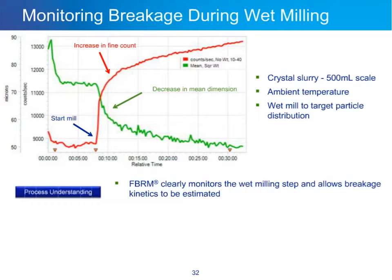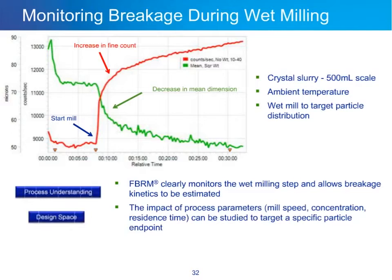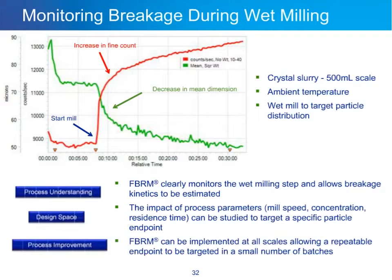From this simple trend, FBRM clearly monitors the wet milling step and allows breakage kinetics to be estimated — how quickly crystals are breaking apart and how changing mill speed impacts that rate. In terms of the design space, process parameters like mill speed, concentration, residence time, and temperature can be studied to target a specific particle endpoint. FBRM can be implemented at all scales, allowing a repeatable endpoint to be targeted in a small number of batches — a widely used application where wet milling parameters studied at small scale are then transferred to pilot and full manufacturing scale.